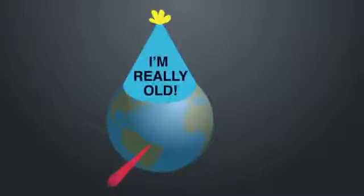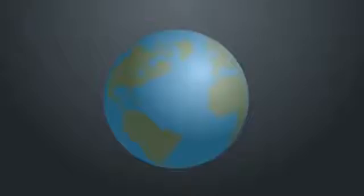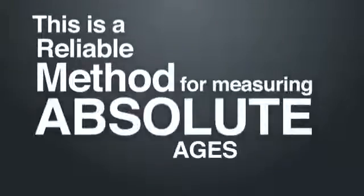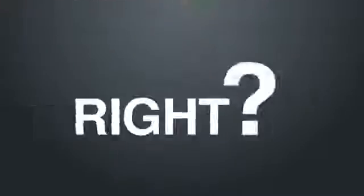Nearly every textbook in science magazine teaches that the Earth is billions of years old, and the primary dating method used for determining this is what is called radioisotope dating, or radiometric dating. Now this is a reliable method for measuring absolute ages of rocks and the age of the Earth, right?